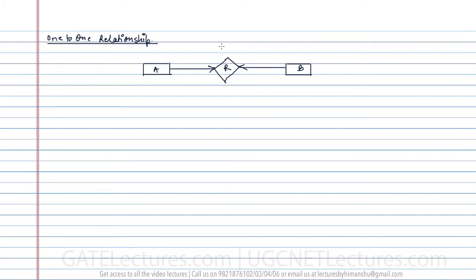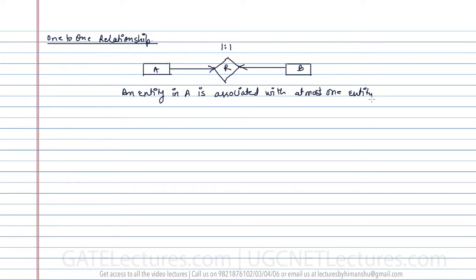In a one-to-one relationship, an entity in A is associated with at most one entity in B, and an entity in B is associated with at most one entity in A.